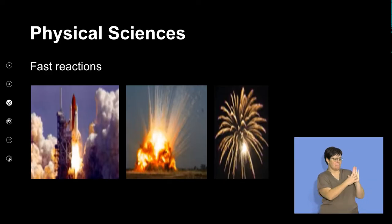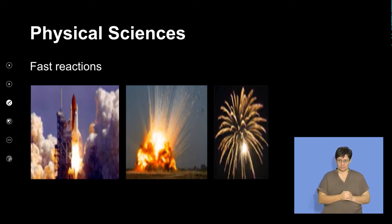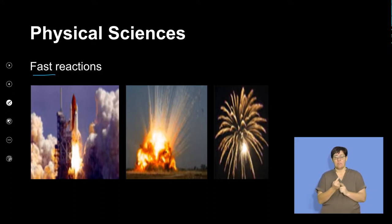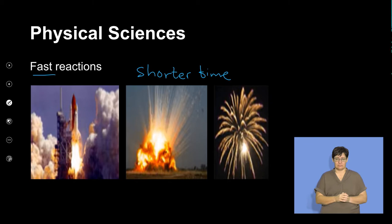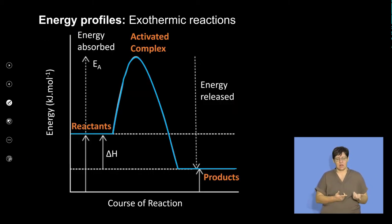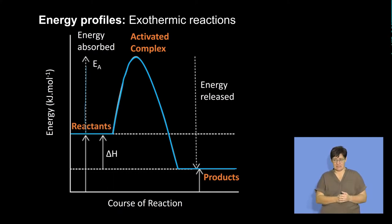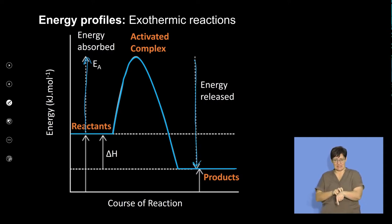Here we have a slide on fast reactions. Looking at these photographs, we can see combustion and explosion. Fast reactions are very quick — they happen over a shorter time. Fast reactions are normally exothermic reactions, where the energy needed to break the bonds is less than the energy that is released during the reaction.